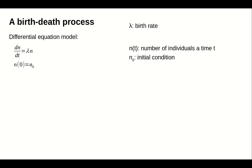A birth-death process. To model a system with birth rate lambda, we could use the differential equation dn/dt equals lambda times n, n(0) equals n0, where n(t) is the number of individuals and n0 is the initial condition.